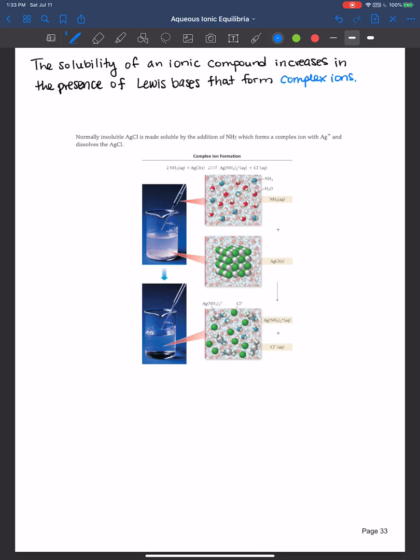So let's look at this example here. Normally silver chloride is insoluble in water. However, if we add ammonia which behaves as a Lewis base, it's a great ligand for complex ions. It does indeed form a complex ion with silver and begins to dissolve the silver chloride.